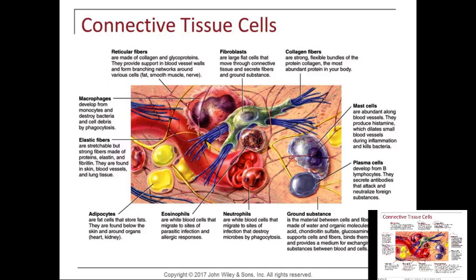If movement doesn't take place, cartilage cells don't regenerate — they degenerate. The degeneration is degenerative joint disease, or osteoarthritis. Osteoarthritis is known as DJD and is not the same as rheumatoid arthritis. Rheumatoid arthritis is an autoimmune condition, possibly linked to intestinal permeability or leaky gut syndrome. It's a systemic problem affecting other systems, not just the joints, and is usually bilateral — both elbows, both shoulders, both knees. With DJD, it could be one hip or one knee — it's not symmetrical.